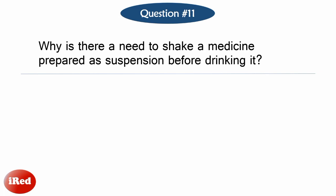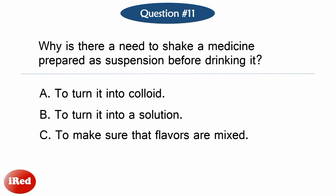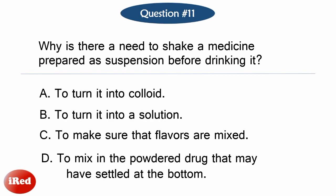Number eleven: Why is there a need to shake a medicine prepared as a suspension before drinking it? Letter A: To turn it into colloid. Letter B: To turn it into a solution. Letter C: To make sure that flavors are mixed. Letter D: To mix in the powdered drug that may have settled at the bottom.